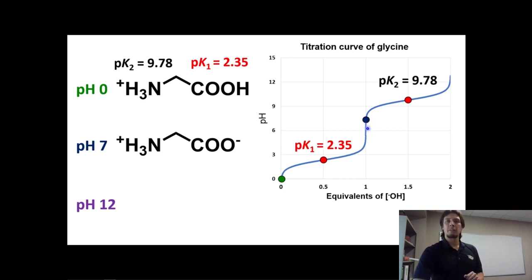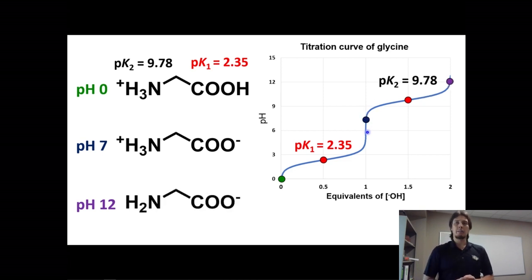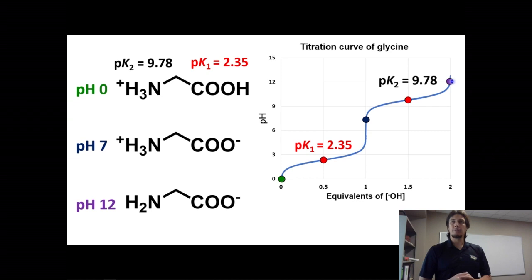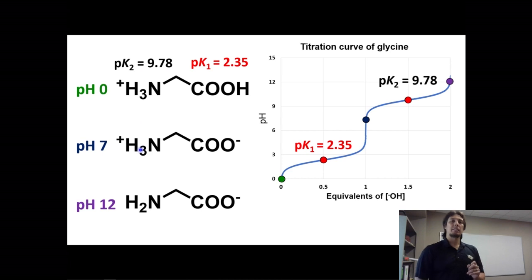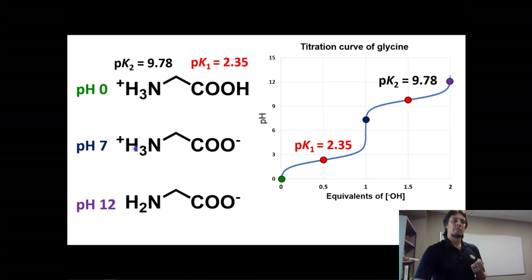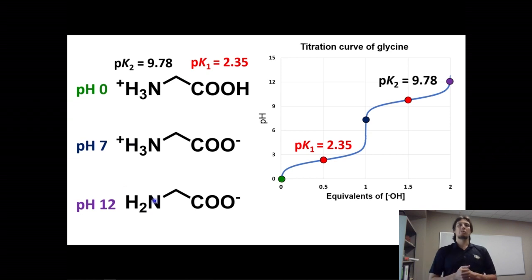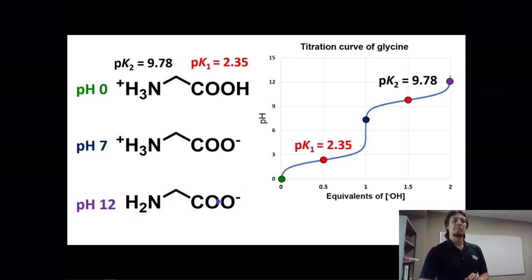If we change the pH to pH 12, we follow the titration curve through the second pKa — pK2 at 9.78 — which is for the amine. Since we've passed through the second pKa, the amine gets deprotonated: it goes from having three protons to two, loses its positive charge, and becomes neutral. At pH 12, most glycine molecules in solution have the protonation state NH2 and COO minus.